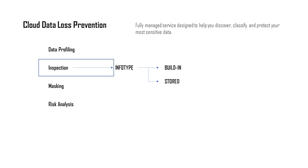In our previous video we talked about inspection. In inspection, you would input a certain file and it would inspect for all the info types you had mentioned — it would not mask that file at all, just mention which info types are present. Now let's say you have a document containing a lot of valuable information which you want to mask before you process that file.